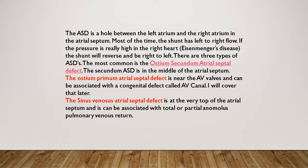An ASD is a hole between the left atrium and the right atrium in the atrial septum. Most of the time the shunt has left-to-right flow. If the pressure is really high in the right heart, which is called Eisenmenger's disease, the shunt will reverse and be right-to-left. There are three types of ASDs.